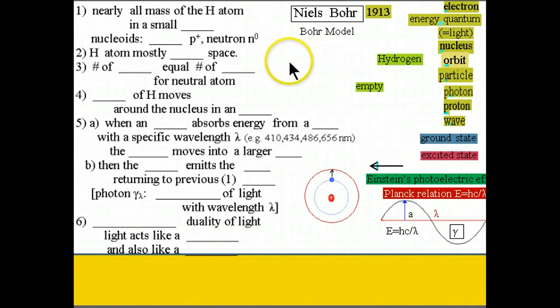Nearly all mass of the hydrogen atom is in a small nucleus. The nucleoids are the proton and the neutron. And the H atom is mostly empty space according to the Rutherford model.